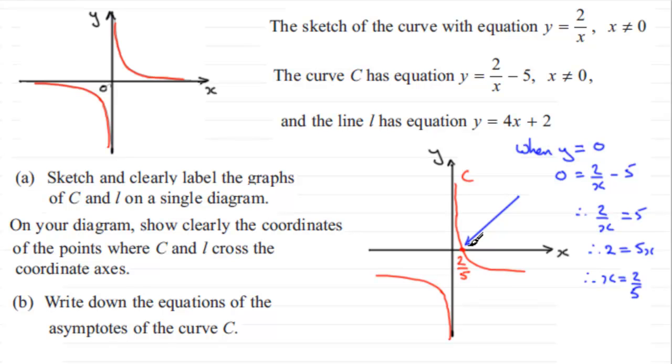Now the other thing we've got to do is draw the line L. L has equation y equals 4x plus 2. So again, being a straight line, we should know that it crosses the y-axis when x is 0. In other words, when x is 0, y would be equal to 2. So let's assume that this point here is 2 units. It's only a sketch, so it's not necessarily going to be absolutely accurate.